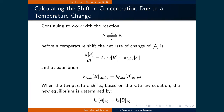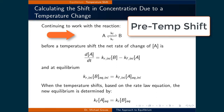Let's now determine how long it takes for a reaction to re-establish equilibrium after a shift in temperature. First, we will define some terms. Continuing to work with the reaction where A is in equilibrium with B, the rate constant for the forward direction is Kf, and the rate constant for the reverse direction is Kr.